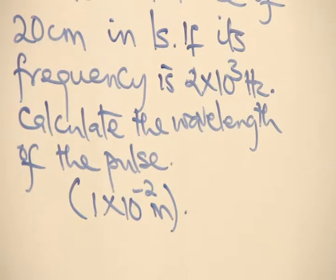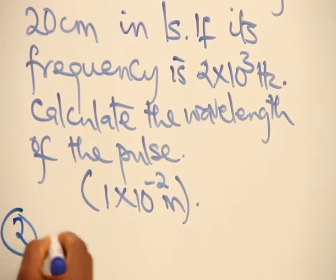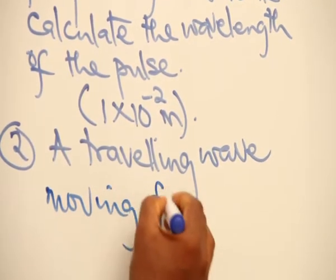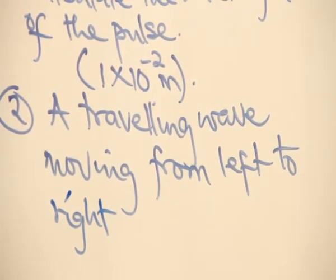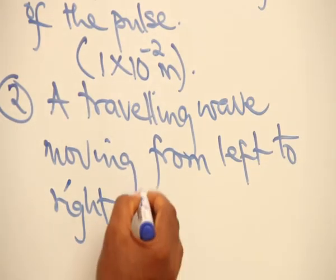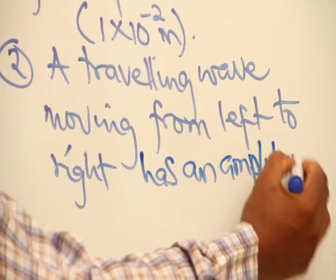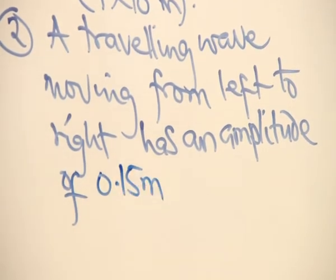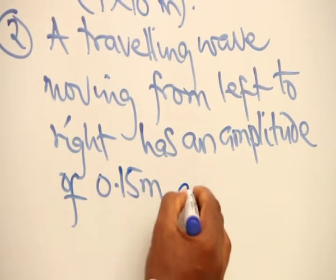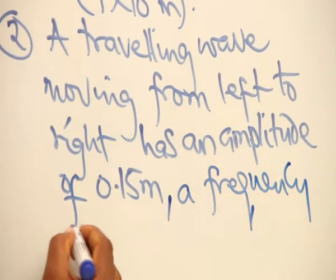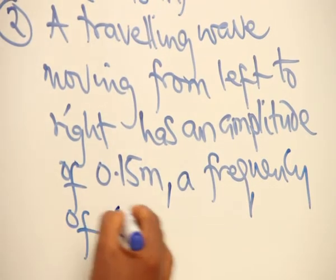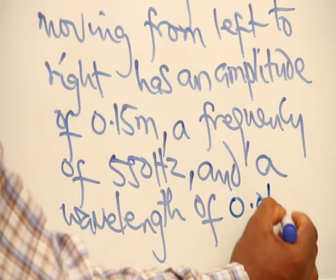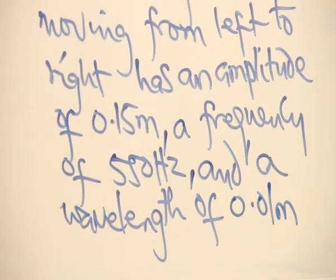Question number 2. A traveling wave moving from left to right has an amplitude of 0.15 meters, a frequency of 550 hertz, and a wavelength of 0.01 meters. Write the wave equation.